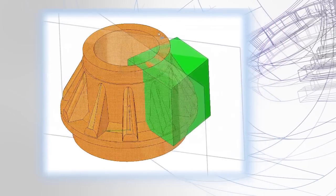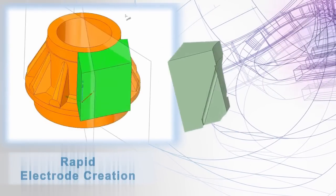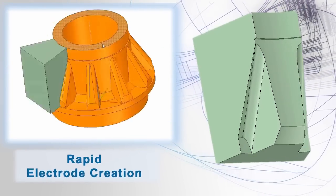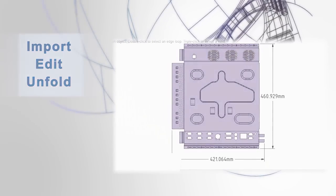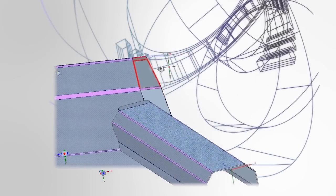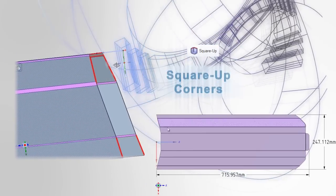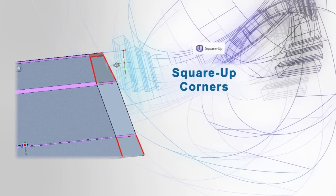Manufacturing users often say SpaceClaim pays for itself in just a few runs. Finally, users also benefit from the correct unfolding of a wide variety of sheet metal parts, whether created in SpaceClaim or imported from any other CAD system, and it's as easy as a few button clicks.